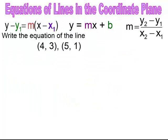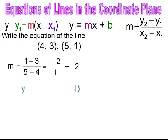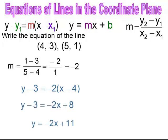Pause and try. Find the slope first — it's negative 2. Substitute into point-slope form using the first point and solve for y. The equation of the line is y equals negative 2x plus 11.